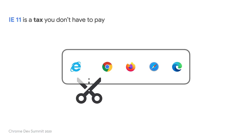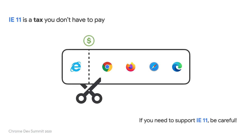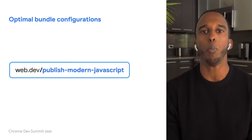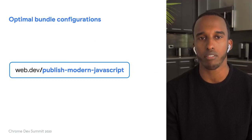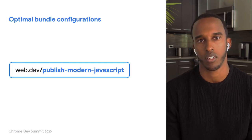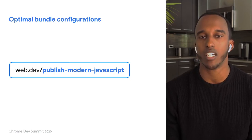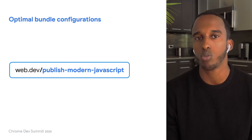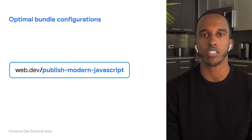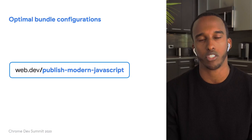This is all really important because IE11 is a tax we and our users don't have to pay. Consider the cost as you think about your site's performance. If you need to support IE11, be careful not to degrade the experience for the majority of visitors in order to get there. We hope we've made the case for why modern JavaScript is so important, and we also want to make this as easy as possible to adopt. So we've published a how-to article that provides configurations for popular build tools to get you started.